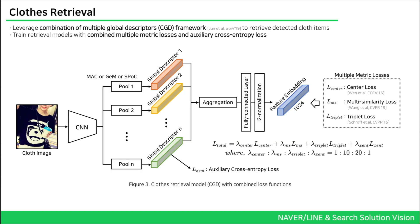To retrieve detected cloths, we leverage the CGD framework because we can combine various global descriptors in flexible ways. We train our retrieval models with combined multiple metric losses and an auxiliary cross-entropy loss. Specifically, we utilize three metric losses: center loss, multi-similarity loss, and triplet loss. We formulate the total loss with a weighted summation of those metric losses and the auxiliary cross-entropy loss.